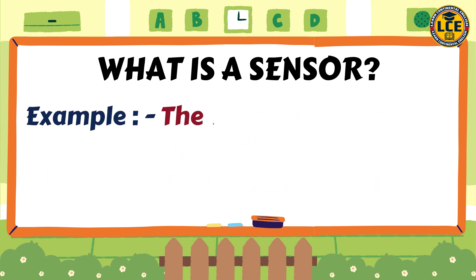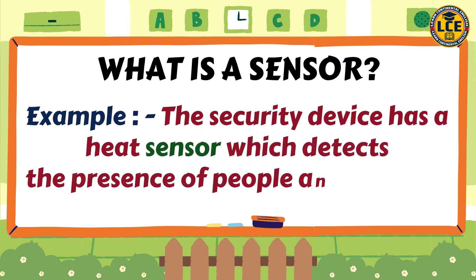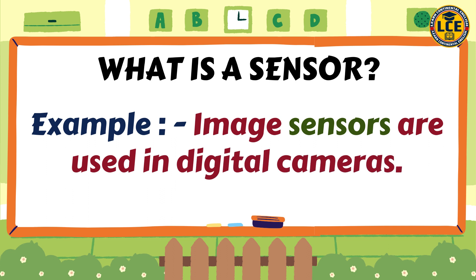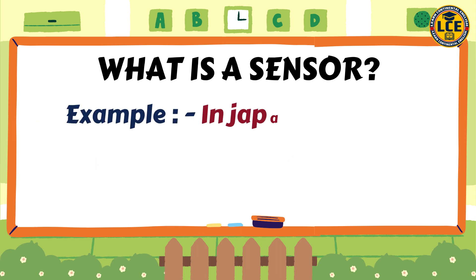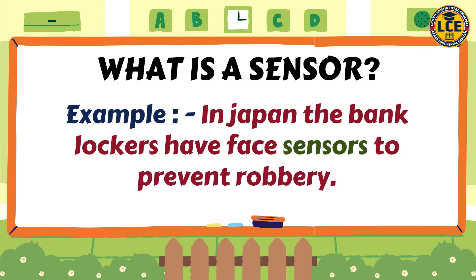Example ke through s-e-n-s-o-r aapko aur achhe se samajh mein aayega. Hum bol sakte hain: 'The security device has a heat sensor which detects the presence of people and animals.' Ek aur example — 'Image sensors are used in digital cameras.' Sensors ki wajah se hi hum digital cameras se photos le paate hain. Ek aur example: 'In Japan, the bank lockers have face sensors to prevent robbery.'